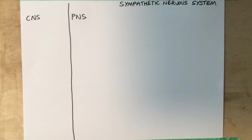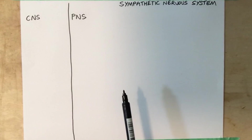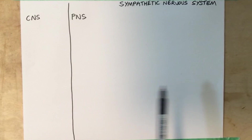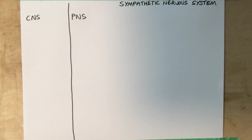In this video I'm going to talk about the sympathetic nervous system, which is a division of the autonomic nervous system. We're going to talk about the motor pathways as well as the neurotransmitters and hormones involved in this system.